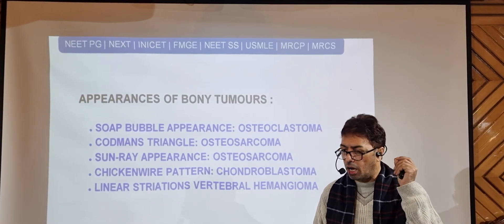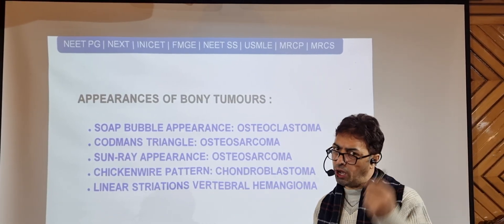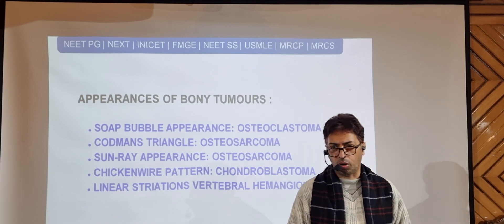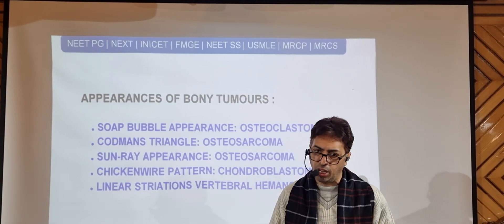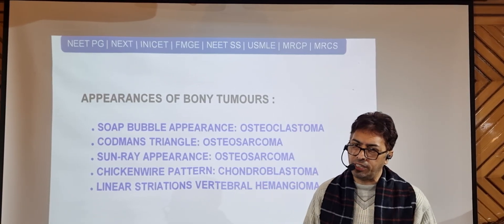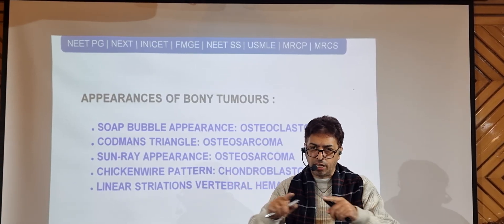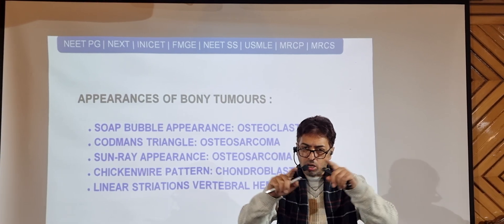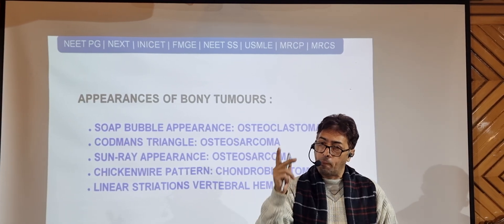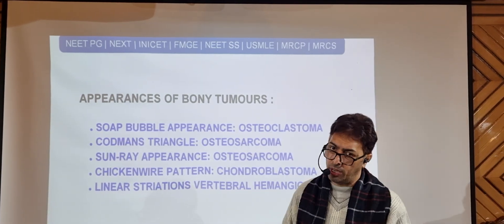Another appearance asked about is the chicken wire pattern. Sometimes bones have a lacy, reticular network with calcifications in between, which is classically called the chicken wire appearance — something in the form of a reticulum or network with calcifications, also called chicken wire calcifications. The classic chicken wire pattern is seen in chondroblastoma. That is very important.